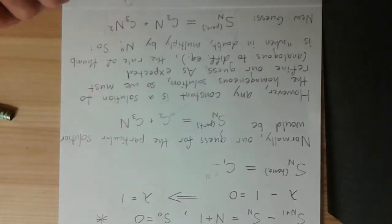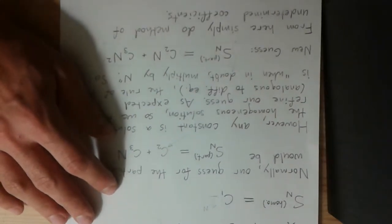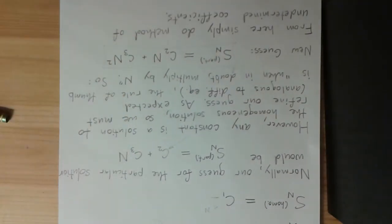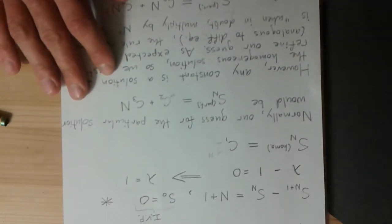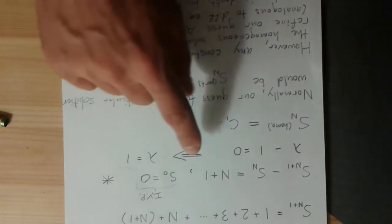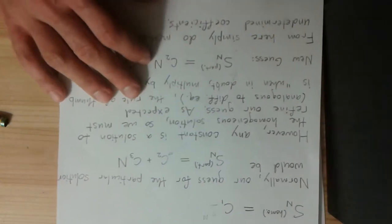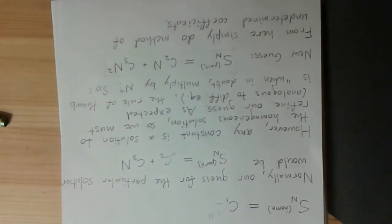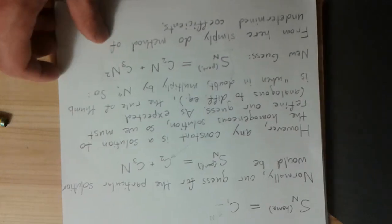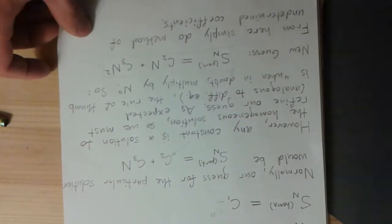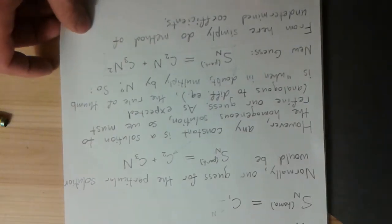The idea, though, would be then, of course, from here you just do method of undetermined coefficients. This is just like, it's pretty much like the last example. The only difference is our input function overlaps with the homogeneous solution, and so it alters our guess a little bit. But specifically, we end up having to multiply it by n. Okay. So, let's see why that is, actually. Let's see why that is.